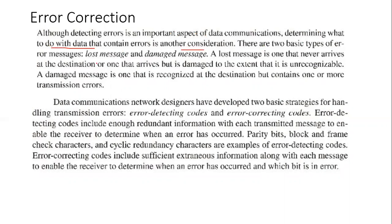There are two basic types of error messages: lost messages and damaged messages. A lost message is one that never arrives at the destination, or one that arrives but is damaged to the extent that it is unrecognized. A damaged message is one that is recognized at the destination but contains one or more transmission errors.